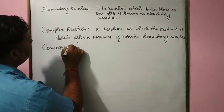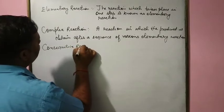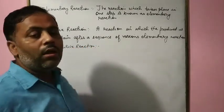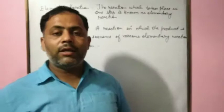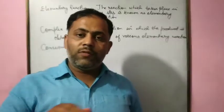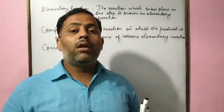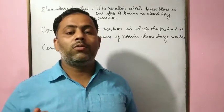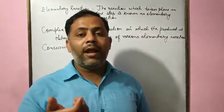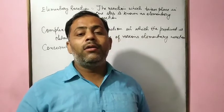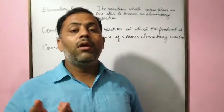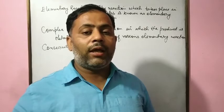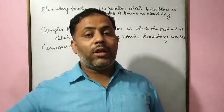A consecutive reaction involves a series of elementary reactions — for example, the conversion of ethane, where ethane is converted to alcohol, then alcohol to aldehyde, then to acid, and finally decarboxylation occurs.